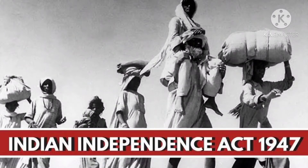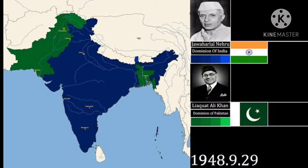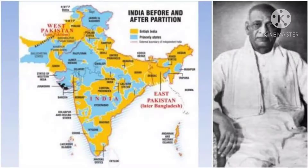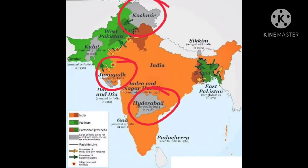The Indian Independence Act of 1947 gave them the right to decide their own future. They were independent to decide on joining either the Indian Dominion or the Pakistan Dominion. If the princely states had decided to act according to their own will, there would have been chaos in the country. But fortunately, under the able leadership of Sardar Vallabha Patel, India's first home minister, many states were merged to India. Almost all states were merged except Junagad, Hyderabad and Kashmir.